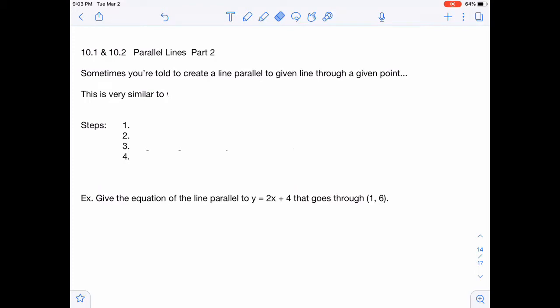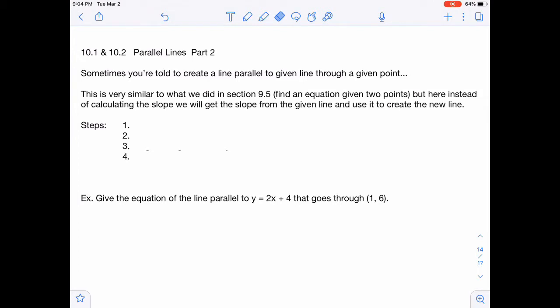This is extremely similar to what we did in section 9.5, where we had to find an equation given two points. But here you don't have to solve for the slope. You don't have to do the y minus y over x minus x. You're going to get the slope from the line that you are given, because it's going to be parallel, so it's going to have the same slope.